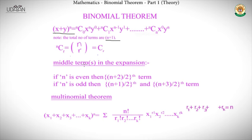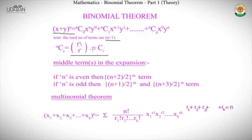More detail on the derivation can be found in your reference material. What we focus on here is how to use the binomial theorem. Note that nCr has multiple notations: an older style used in classic texts, and the standard Cr notation where n is understood from context.